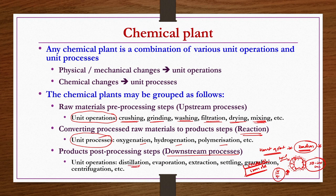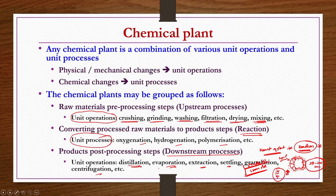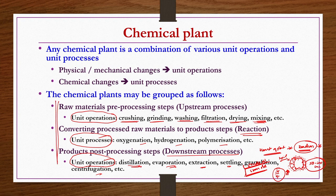Downstream processes include distillation, evaporation, extraction, settling, granulation, and centrifugation — all of them are again physical or mechanical changes and are known as unit operations. In a plant, the majority of capital cost is occupied by unit operations and connections. Almost two-thirds of the capital cost of any plant is devoted to unit operations and connecting pipes.